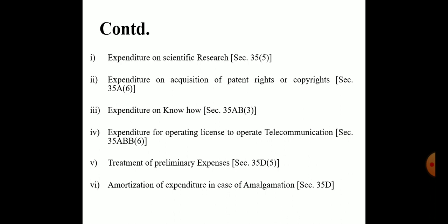Second, expenditure on acquisition of patent rights or copyrights — these are intangible assets that cannot be seen or touched, such as patents, copyrights, and goodwill. When patents or copyrights acquired by the amalgamating company are transferred to any amalgamated Indian company, the provisions of Section 35A applicable to the amalgamating company shall become applicable in the same manner to the amalgamated company, and they will take the benefit of depreciation or unabsorbed expenses.